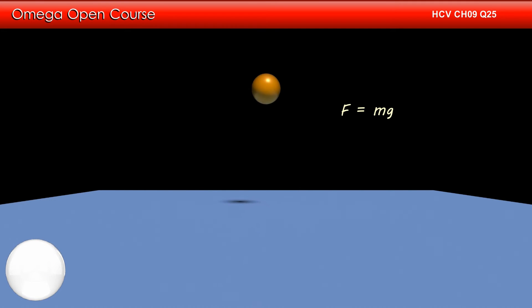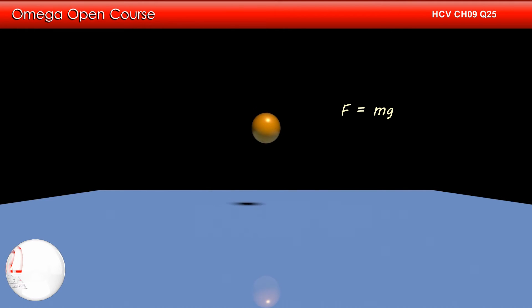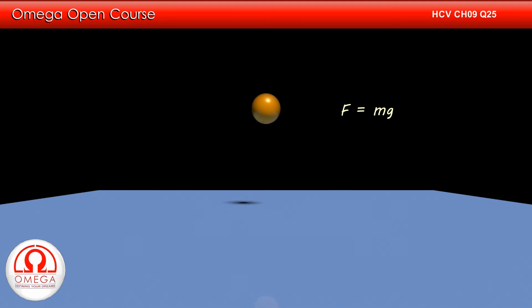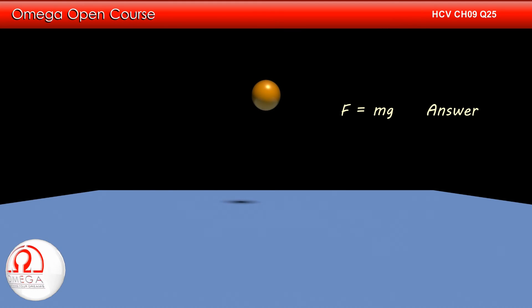Thus, the average force on the ball by the floor is mg. As per Newton's third law, the average force applied by the ball on the floor must be equal to the average force applied by the floor on the ball. Therefore, the average force applied by the ball on the floor is mg. This is our answer.